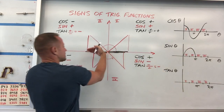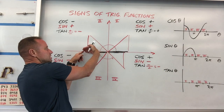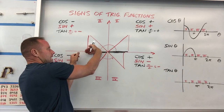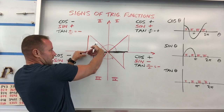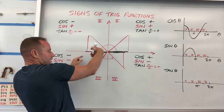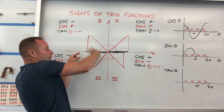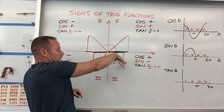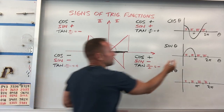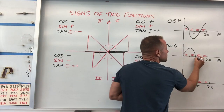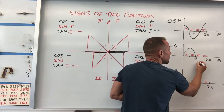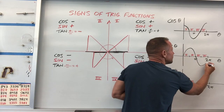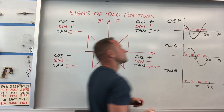And then you notice the sine function starts to go negative here. The vertical projection is negative throughout the last two quadrants. So your sine wave is going to look like this.